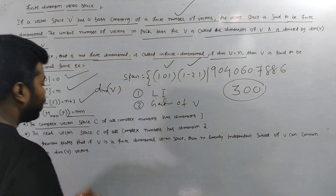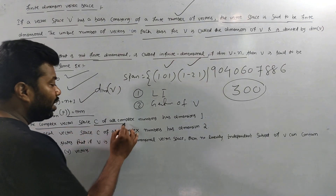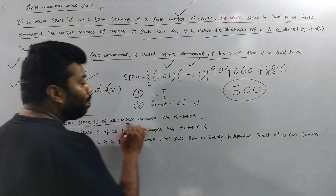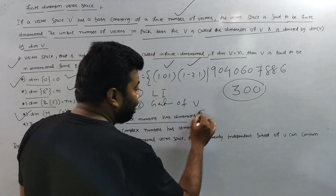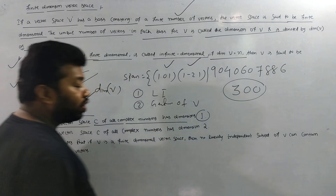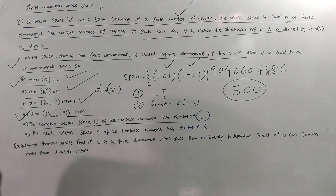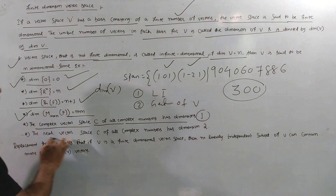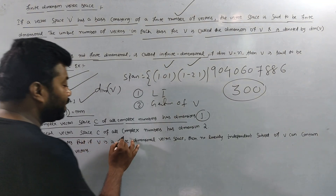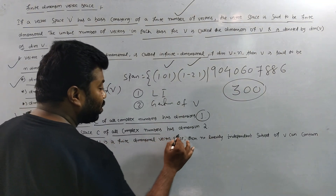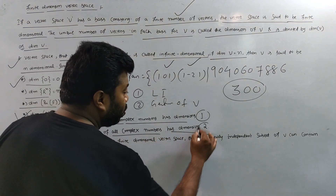The complex vector space C of all complex numbers has dimension 1. The real vector space of C, all complex numbers, has dimension 2.